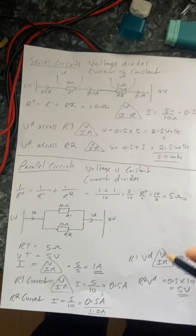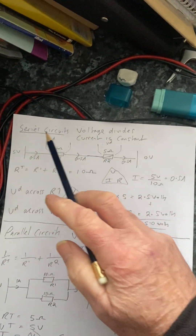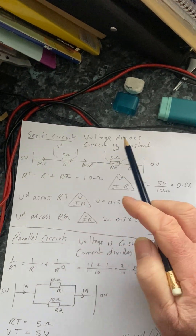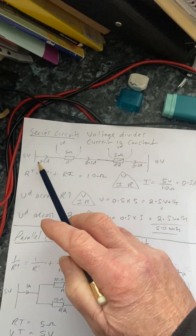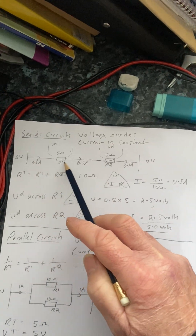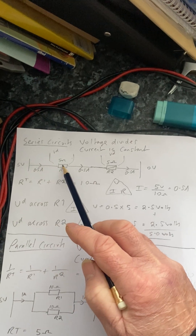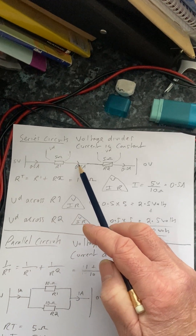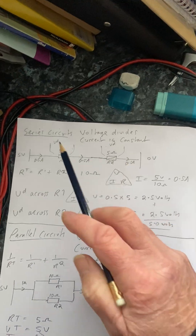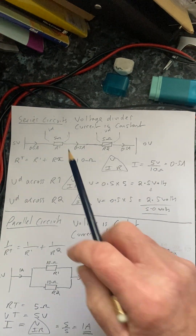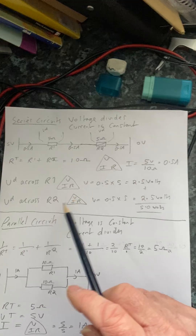I've rejoined that in series. Remember: voltage divides, and the current is constant. The current remains the same all the way through this circuit — it enters one point and leaves the same value. The voltage, however, divides, and this will start getting your head around volt drop.